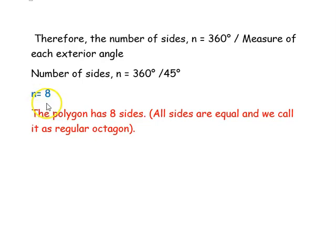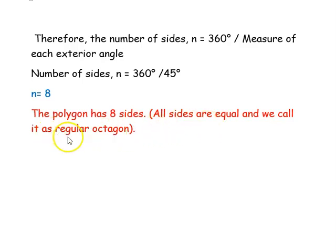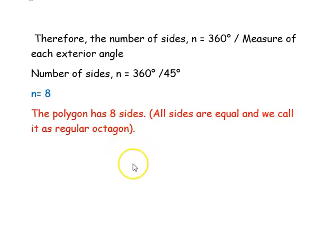So n = 8 indicates the number of sides. The polygon has 8 equal sides, so it is a regular polygon. Since it is an 8-sided figure, we call it a regular octagon. Hope you have understood all the questions well. Thank you for watching the video.